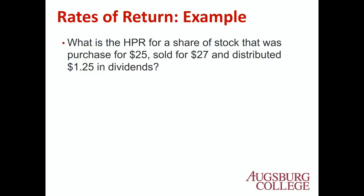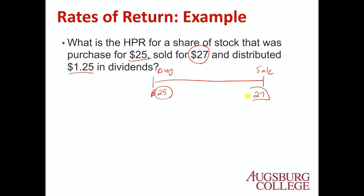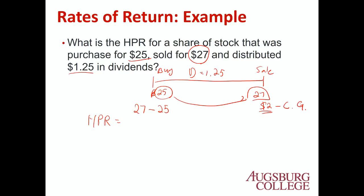Here is an example: What is the HPR for a share of stock that was purchased for $25, sold for $27, and distributed $1.25 in dividends? We have two components: the capital gain and the dividend. You buy at $25 and sell at $27, so the capital gain is $2. The dividend is $1.25. So HPR equals ($27 minus $25 plus $1.25) divided by $25.